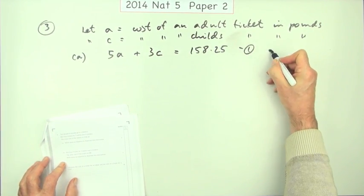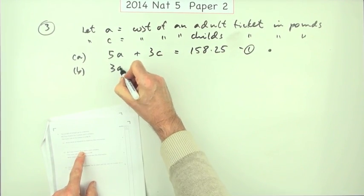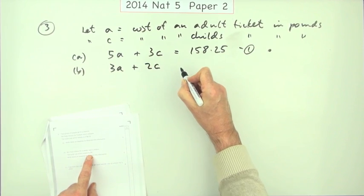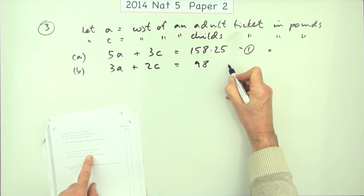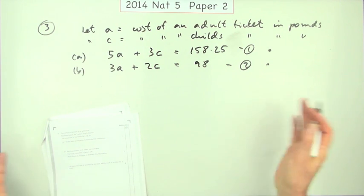I'm going to call that equation one. Part B: three adult tickets plus two children's tickets comes to £98. I'll call that equation two. There's a mark. Two easy marks. I haven't done anything apart from pick out the numbers.